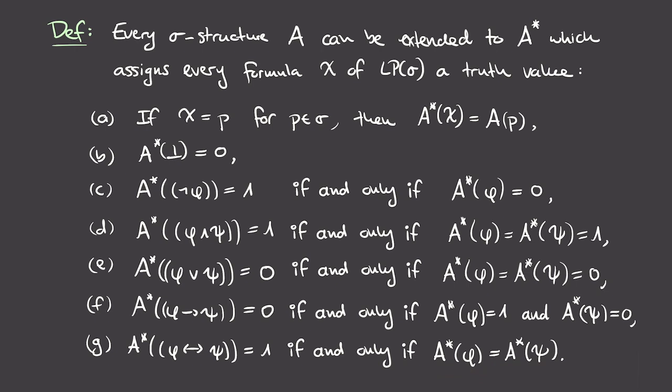With that, we've covered all the connectives occurring in our logic, and we've extended a sigma structure A — which just defined truth values on the atomic symbols — to all formulas of the language LP sigma. This definition is essentially what we already saw in the video on naive propositional logic, where truth tables were introduced. Here we're just introducing new terminology, namely the sigma structure and the function A star, but the underlying ideas are the same.